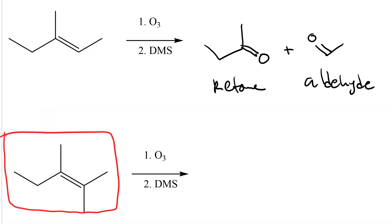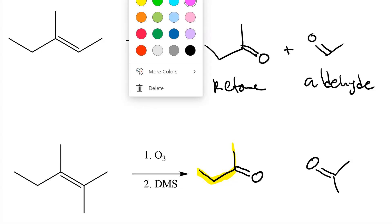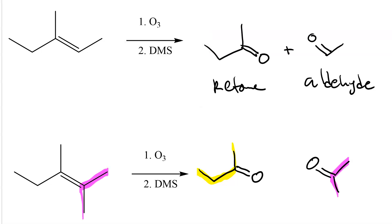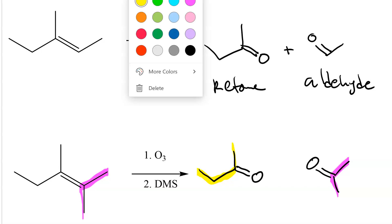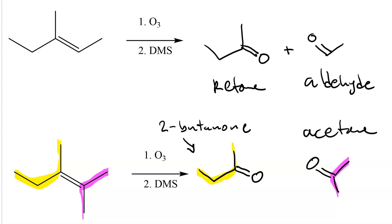Now try the second one — pause your video and here are my products. You can see the fragments of the original alkene in the two ketones: this one is 2-butanone and this one is acetone. A tetrasubstituted alkene subjected to ozonolysis will give you two ketones; a trisubstituted one will give you a ketone and an aldehyde; and a symmetrical disubstituted one will give you two aldehydes.